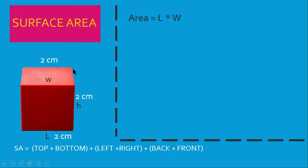So any side you'd get two centimeters. Now to find the area, you are always going to multiply length times width. We'll talk about the height later. Here we want to find the area of all six sides of the cube. To find the surface area, it's nothing more than finding the area of the top and bottom, adding it to the area of the left and right, and adding that to the area of the back and front.